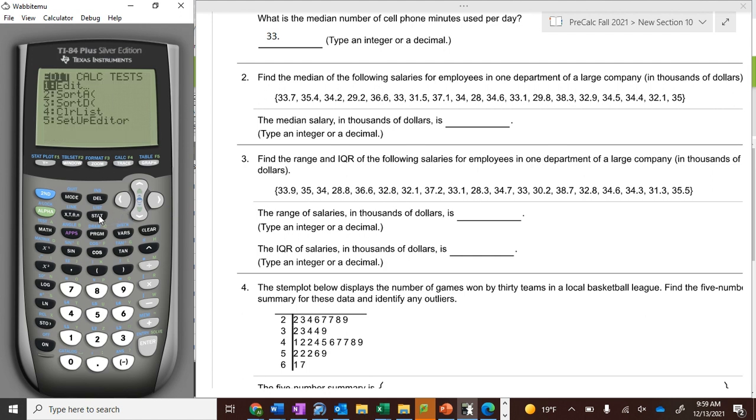Then you go stat, then over to calc, and these are one-variable statistics. You click enter, enter, enter, and there they are. The x with the line over it is the mean. These other ones deal with standard deviation, which we'll get to later in class. The number of terms is 19.